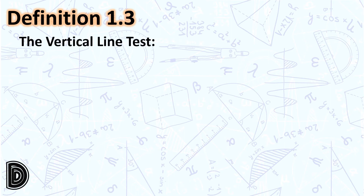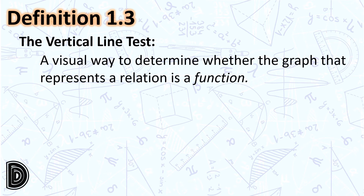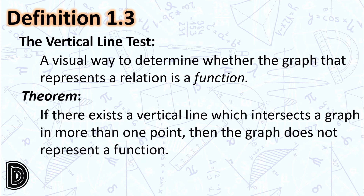The vertical line test is a visual way to determine whether the graph that represents a relation is a function. If there exists a vertical line which intersects a graph in more than one point, then the graph does not represent a function. To identify whether a graph represents a function, we use the vertical line test — if it intersects the graph in more than one point, then the graph is not a function.